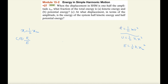We have to write kinetic energy in terms of U and E, and then solve part A. We also know that the total energy is the sum of kinetic energy plus potential energy. From this equation, kinetic energy K is equal to total energy E minus potential energy U.